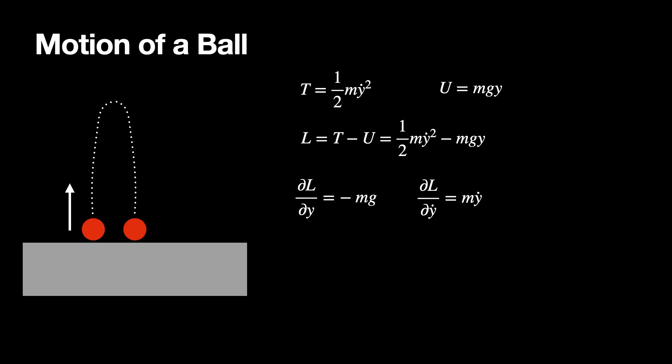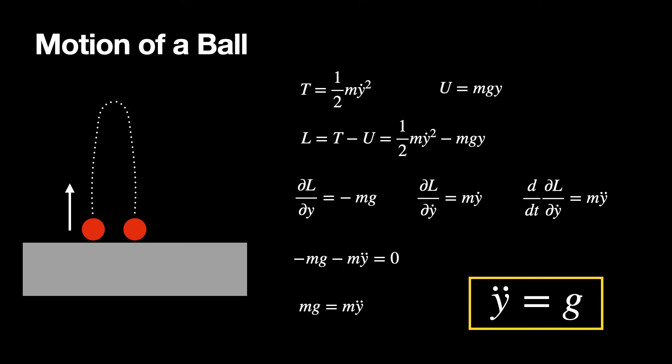Now I take the time derivative of the partial of L with respect to y-dot. M is constant, so the derivative of y-dot with respect to time is y-double-dot. Plugging into the Euler-Lagrange equation, I get negative Mg minus M y-double-dot equals zero, so the acceleration equals g. Which, yeah, we already knew that — but you start with a problem you know the answer to in order to verify you're doing it correctly.